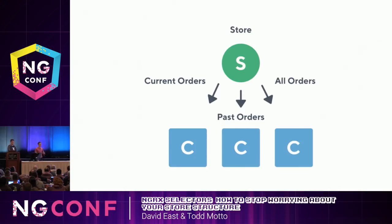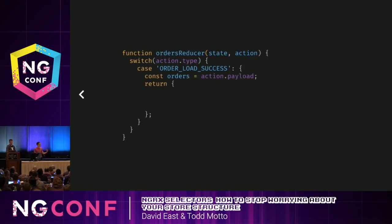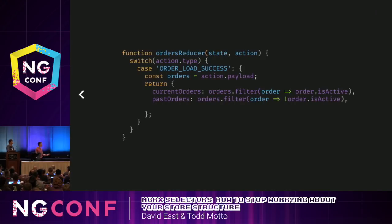Then I needed to store all orders, and this is where it got weird — because if I have current orders and past orders, that's all orders. I didn't really know what I was doing, so I stored all the orders as a third slice in the store. At first the reducer was actually kind of easy, which tricked me into following this pattern. I would switch on order load success, filter the array to get current orders by the isActive property, invert that for past orders, and tack on all orders. I thought this was really easy.